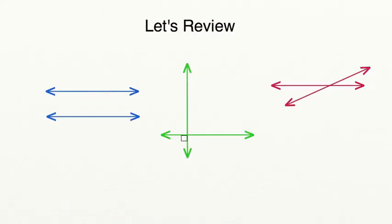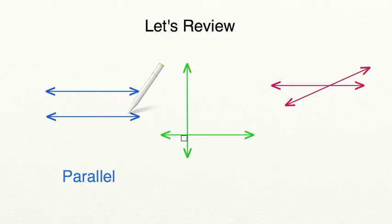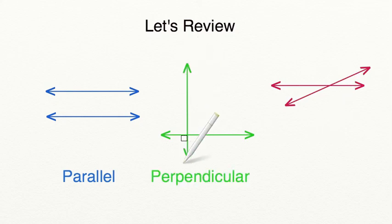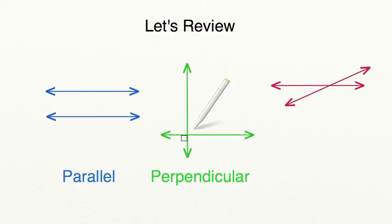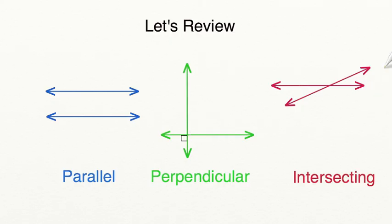Let's take a moment to review what you've learned in today's lesson. Parallel lines are two lines that are the exact same distance apart from each other and will never meet. Perpendicular lines are two lines that cross or intersect each other, creating 90-degree angles — you'll see this indicated by a square in the corner. And lastly, intersecting lines are two lines that cross each other and intersect at the same point.